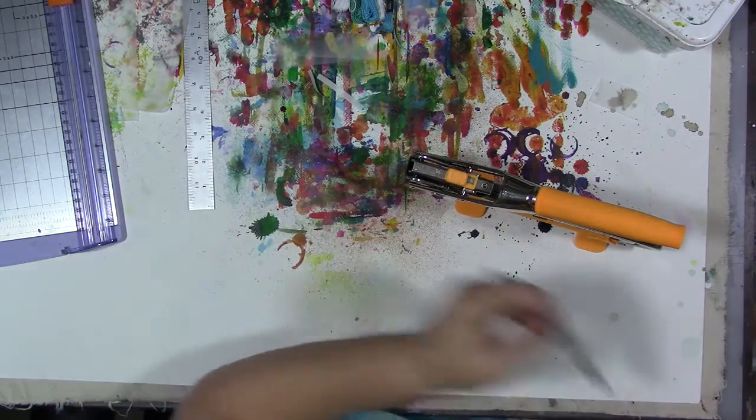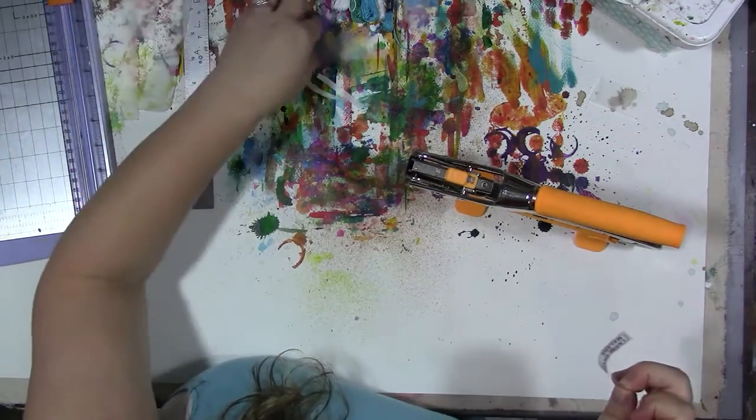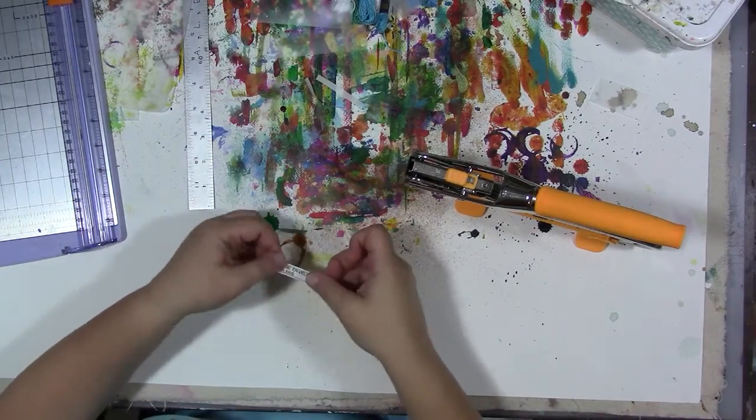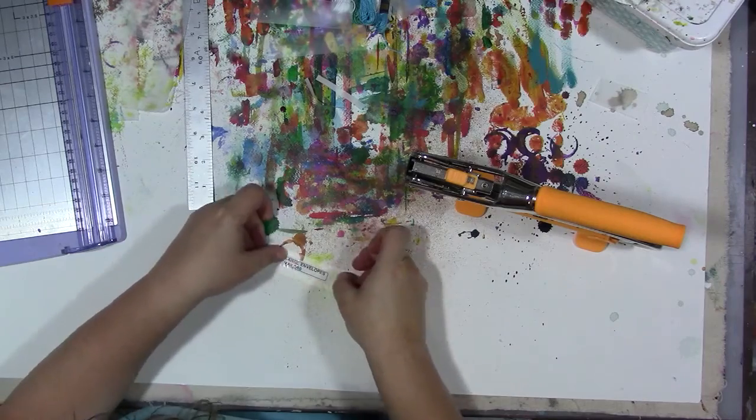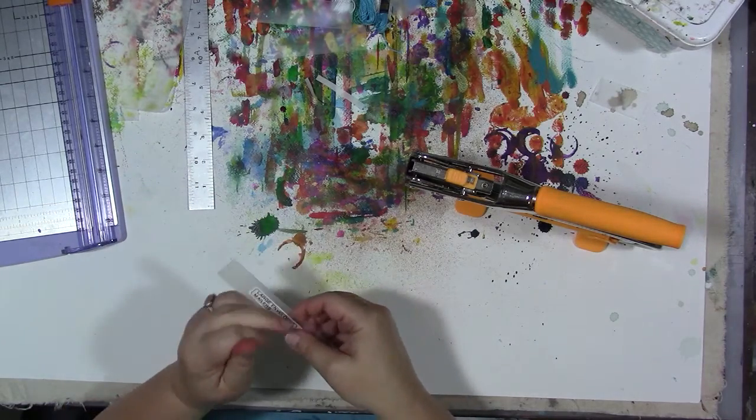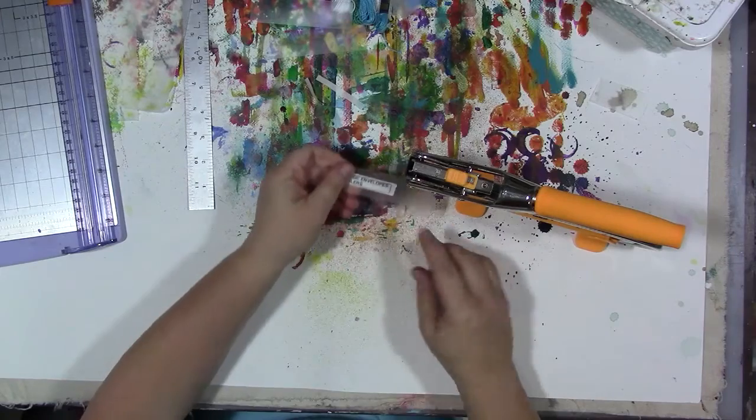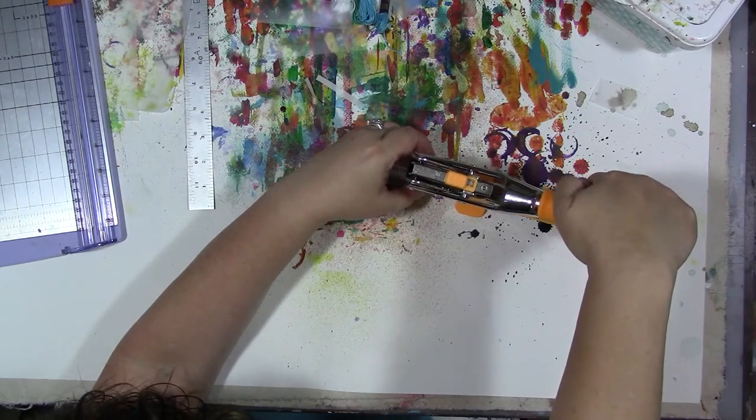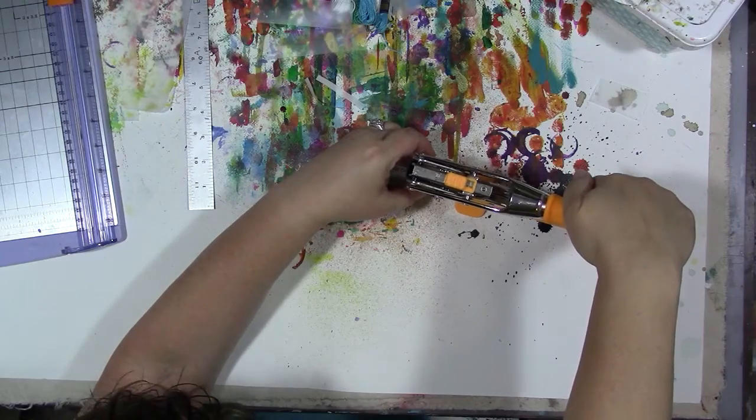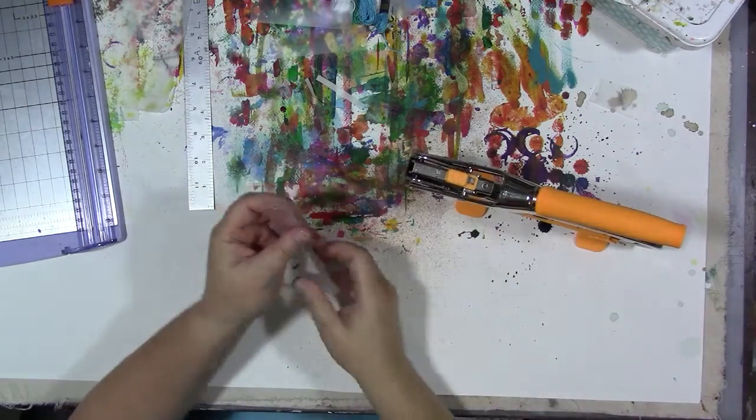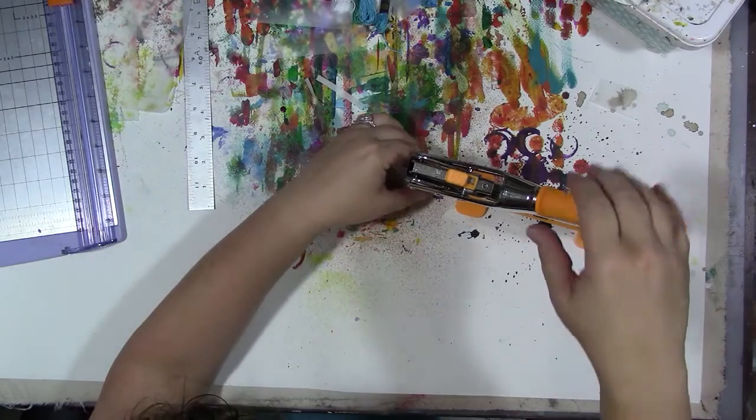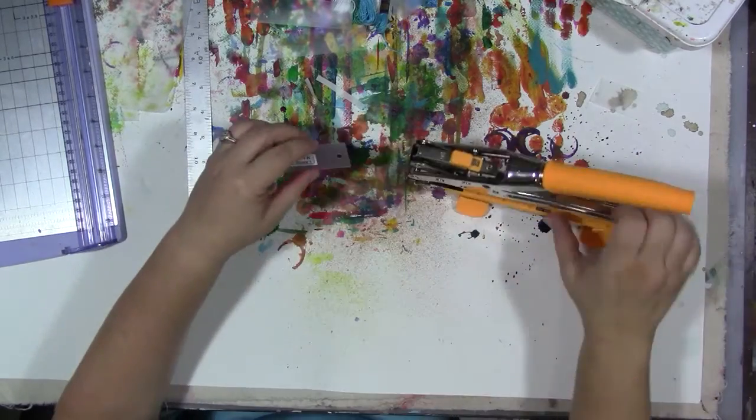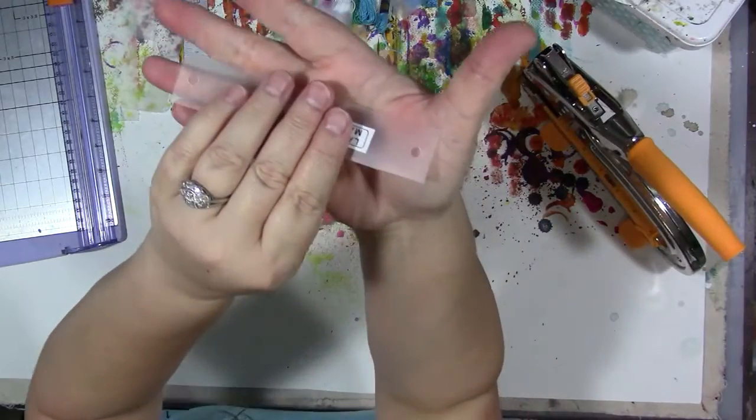So this is what I mean, you can just peel the label off and we're going to do something else with that. Let's get another one. Then I'm going to center it, hopefully better than I did last time. Yeah, that's better. I'm just going to put a hole on each end.